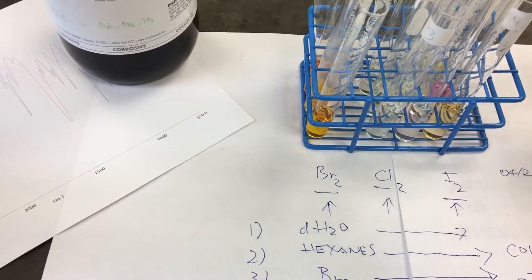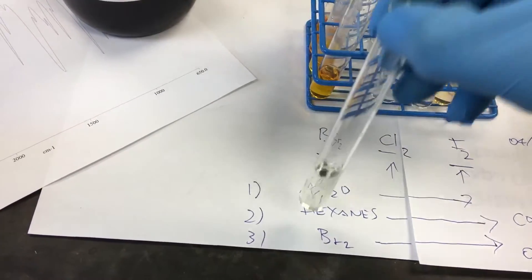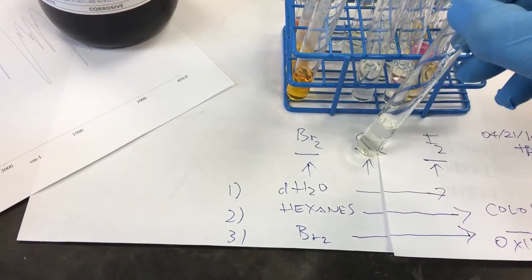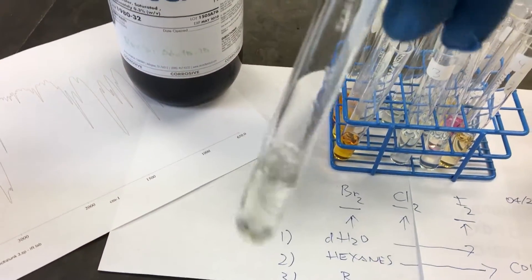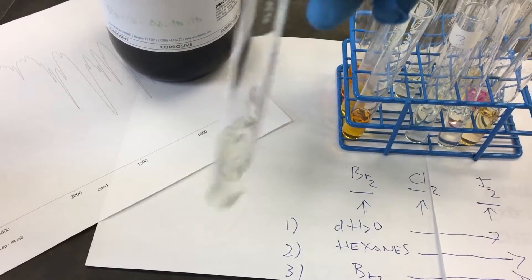Go to the second. There we go. Hexanes and chlorine. It's a light yellow-ish color.